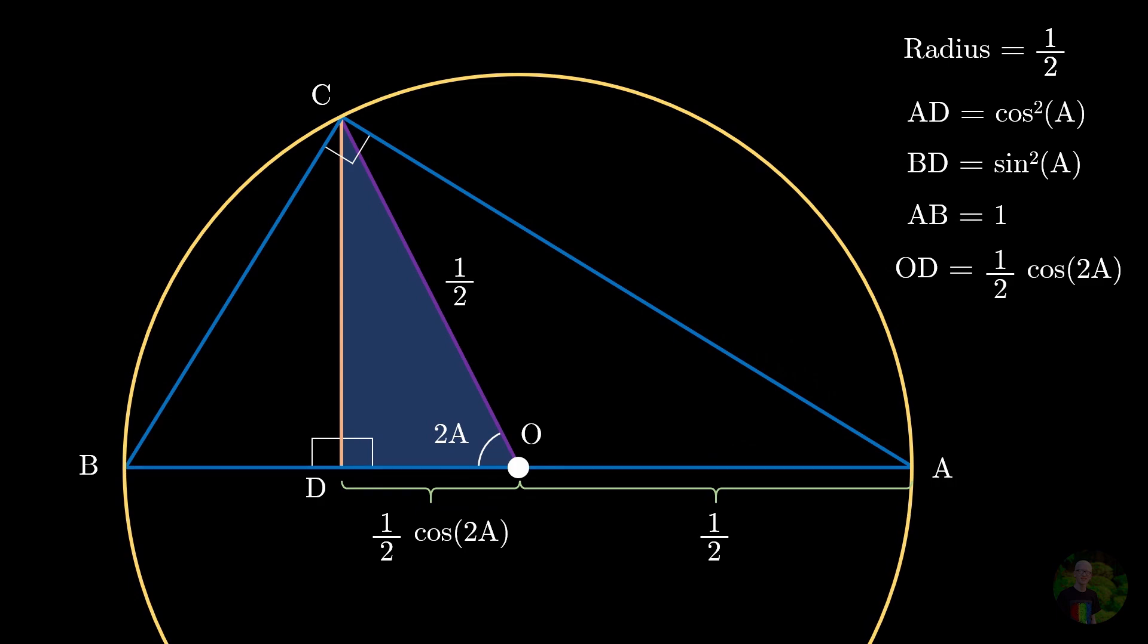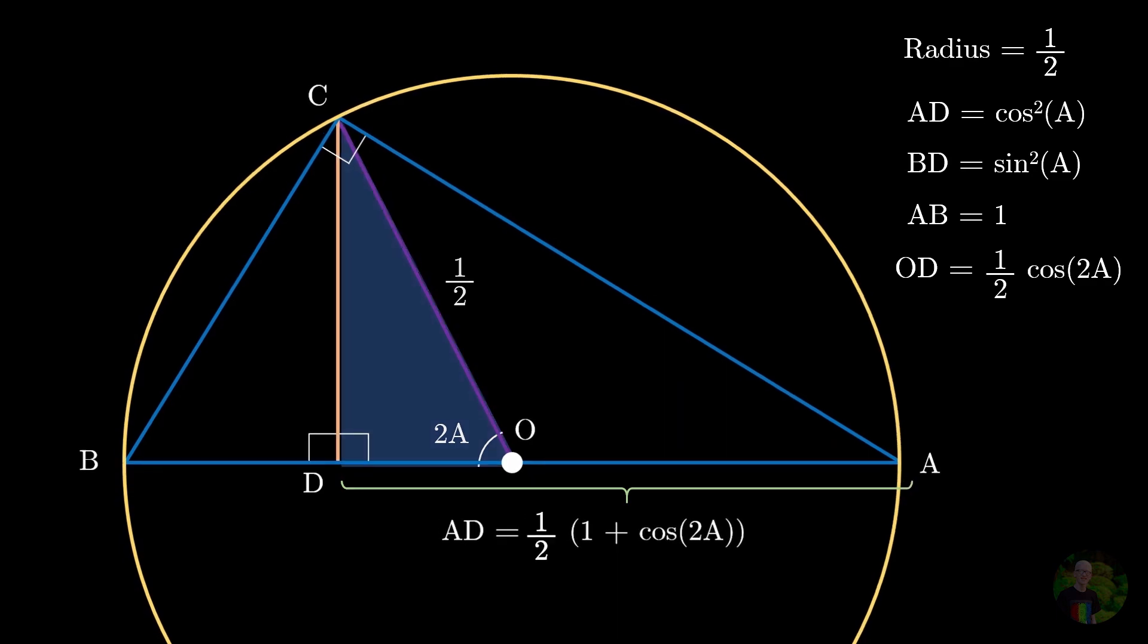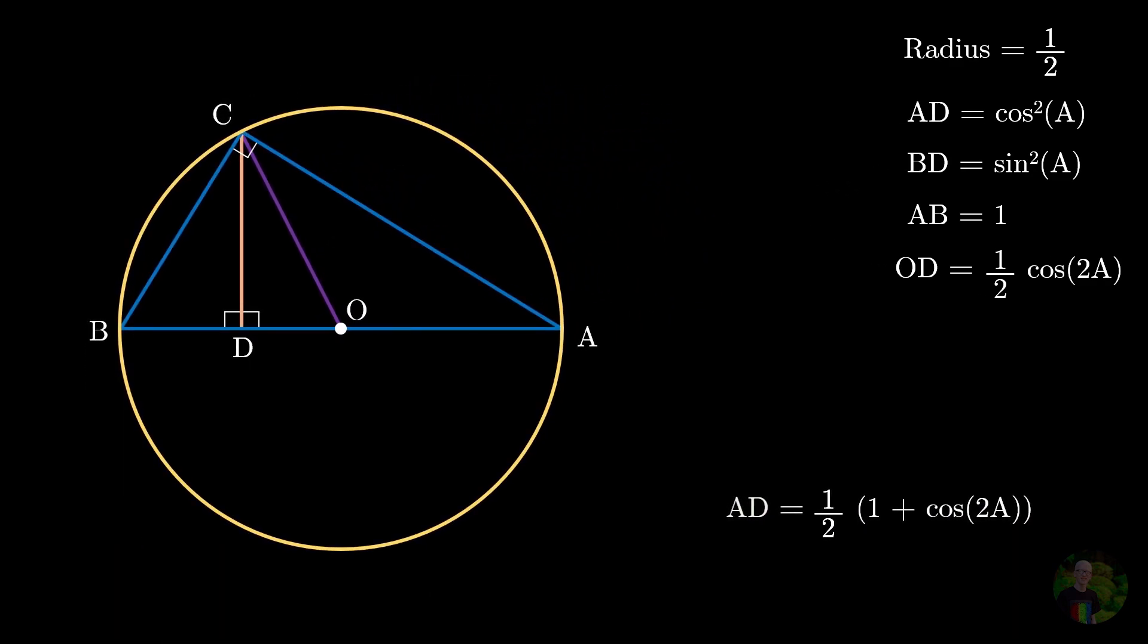And finally, we get AD as 1 half cos 2A plus 1 half. And if I factor out 1 half, we get AD as 1 plus cos 2A divided by 2, which is also equals to cos squared A. How cool is that?